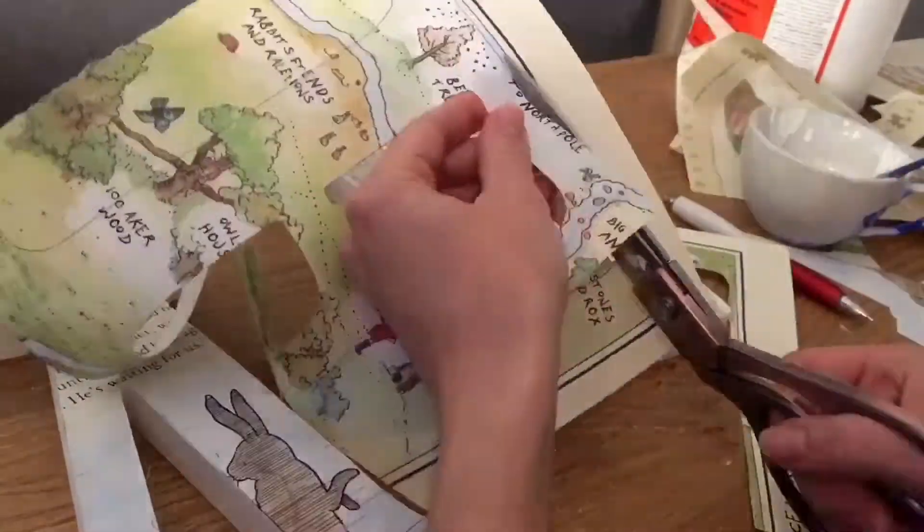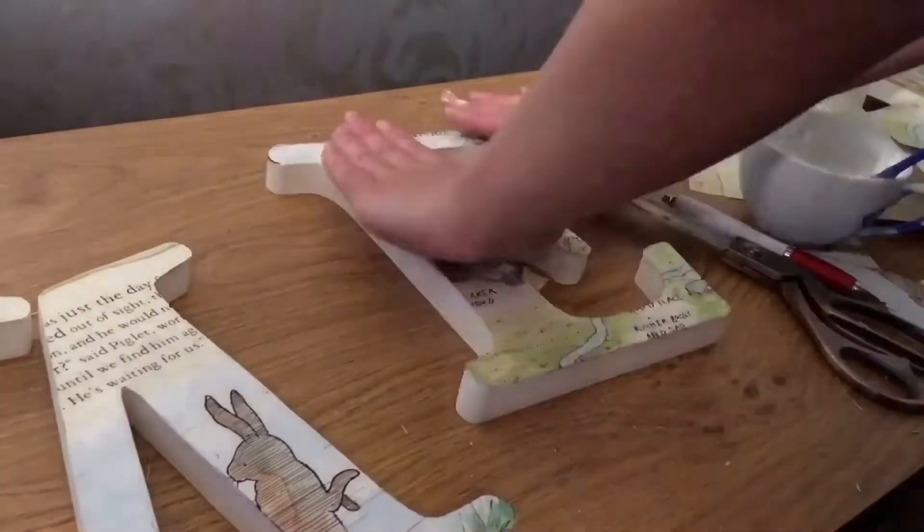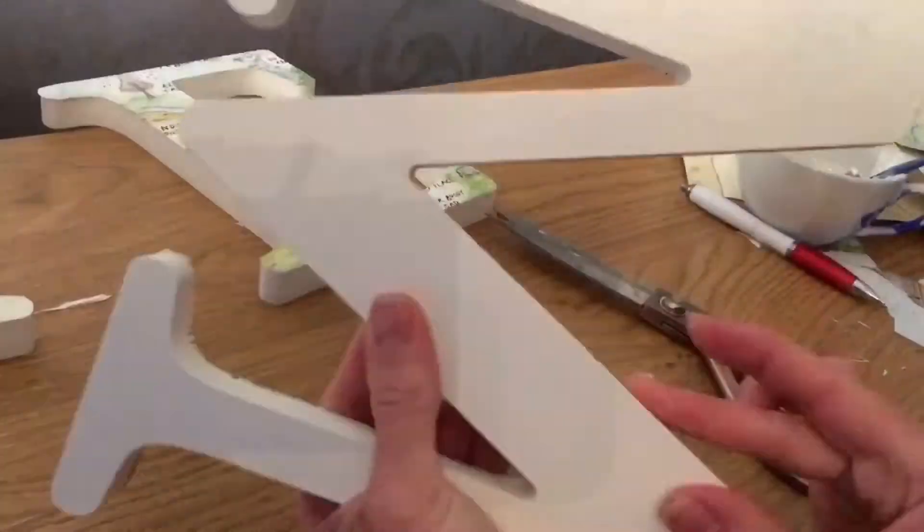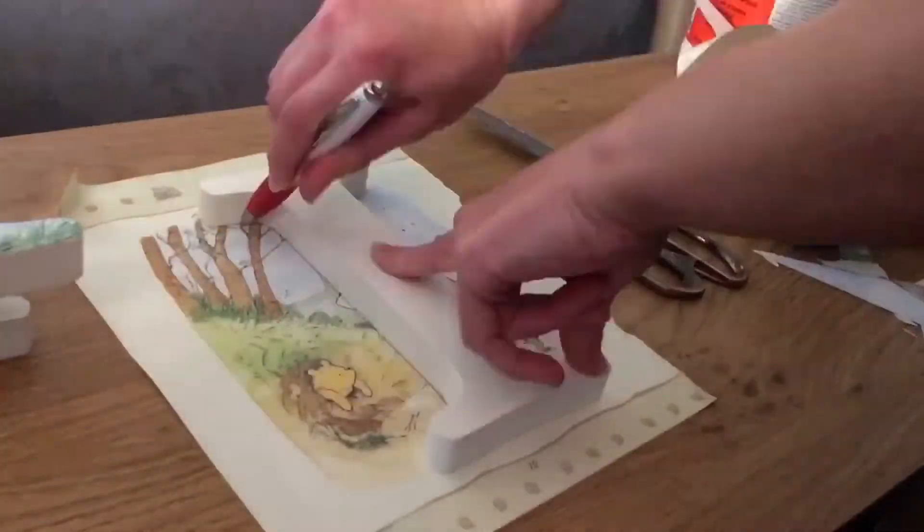Again you want to do this for each and every letter. Draw the stencil, cut it out, glue it down, and then trim the letters as you go.